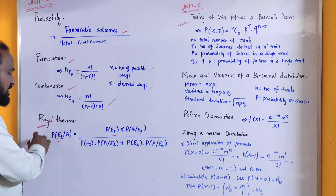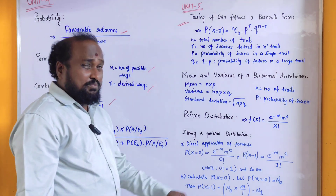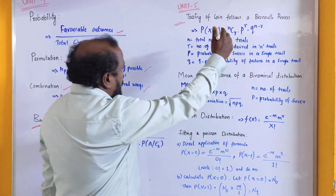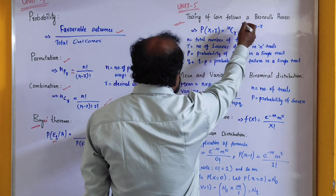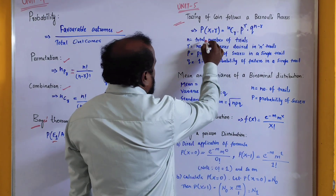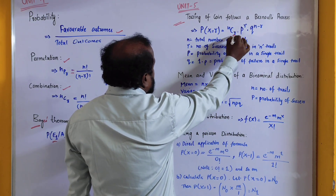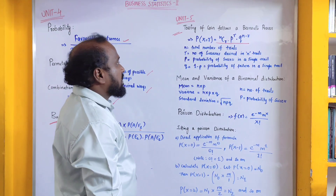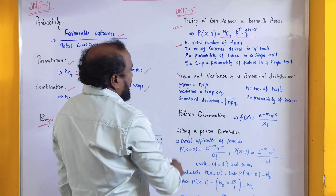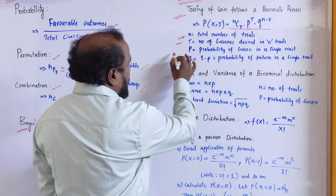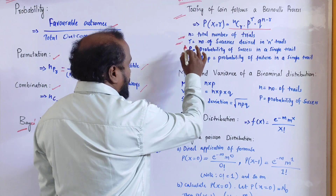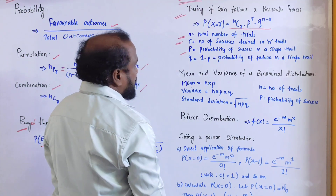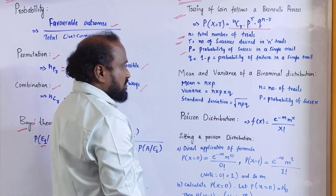Unit number five — the Bernoulli process. Tossing of a coin follows a Bernoulli process. The formula is: P(X equals R) equals nCr into P to the power R into Q to the power N minus R. Here N equals number of trials, R equals number of successes, P equals probability of success in a single trial, and Q equals one minus P, that is probability of failure in a single trial.